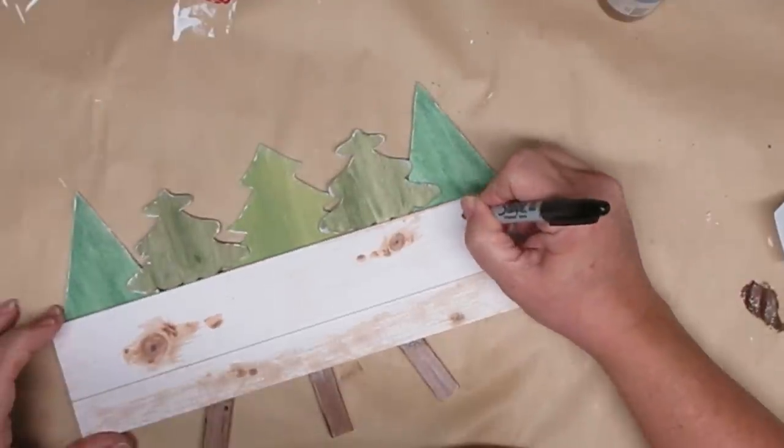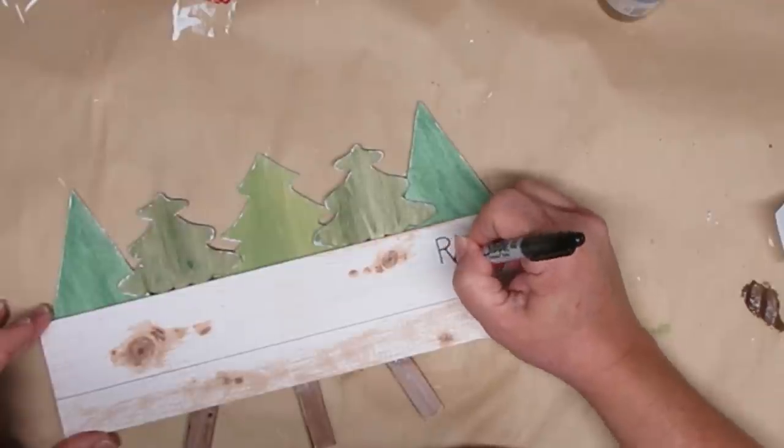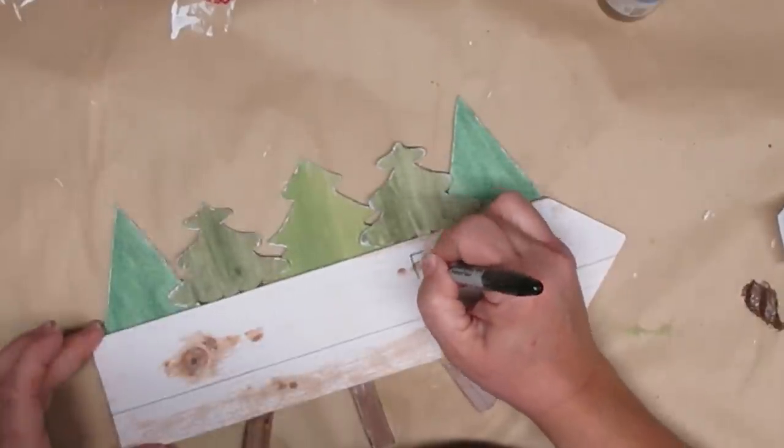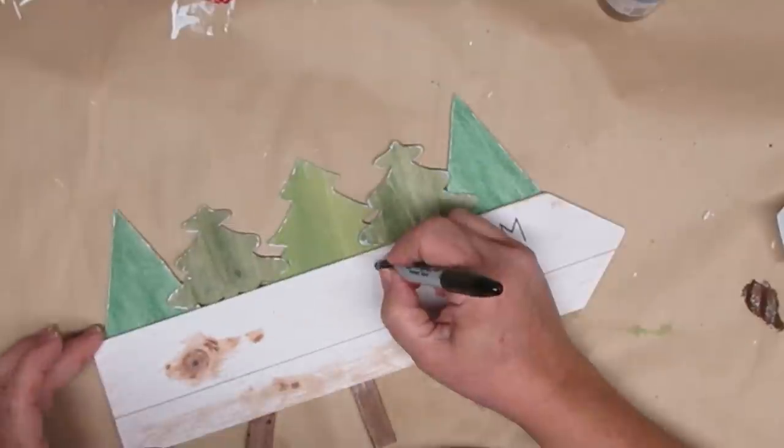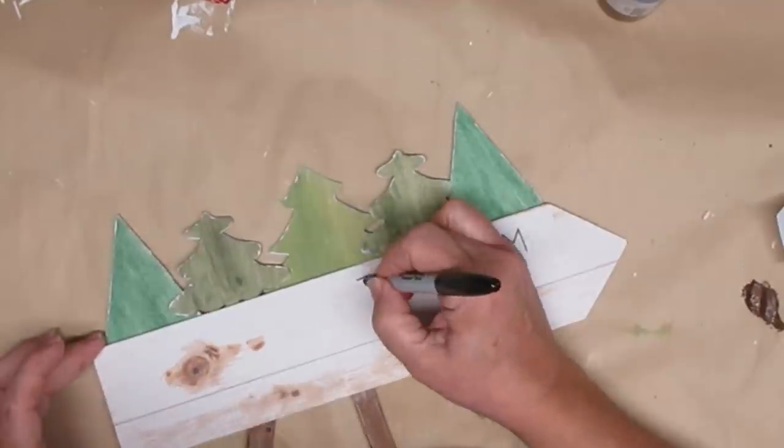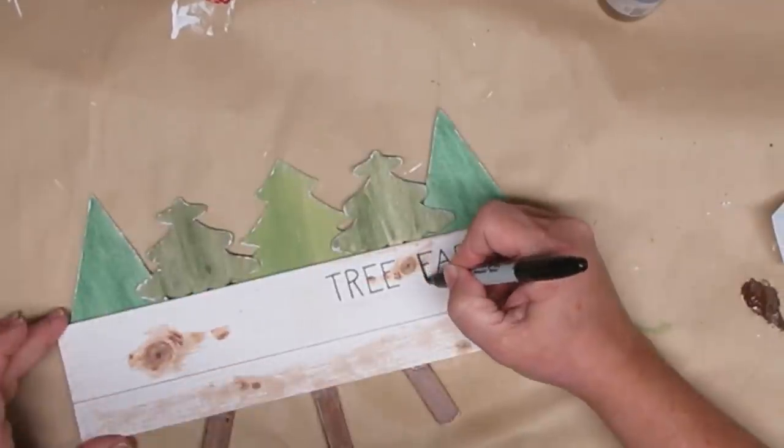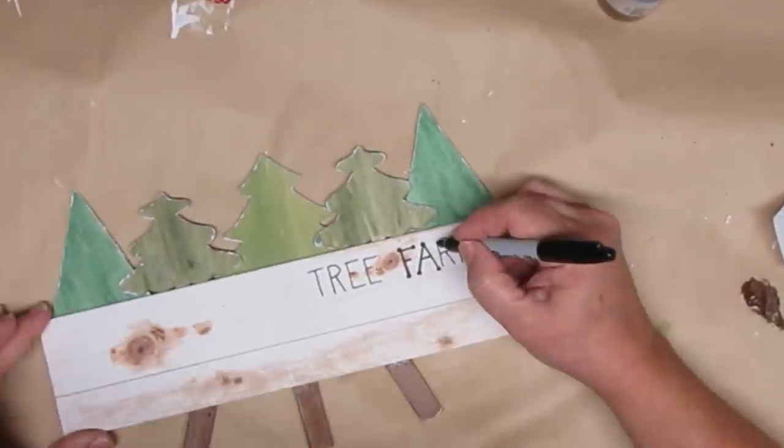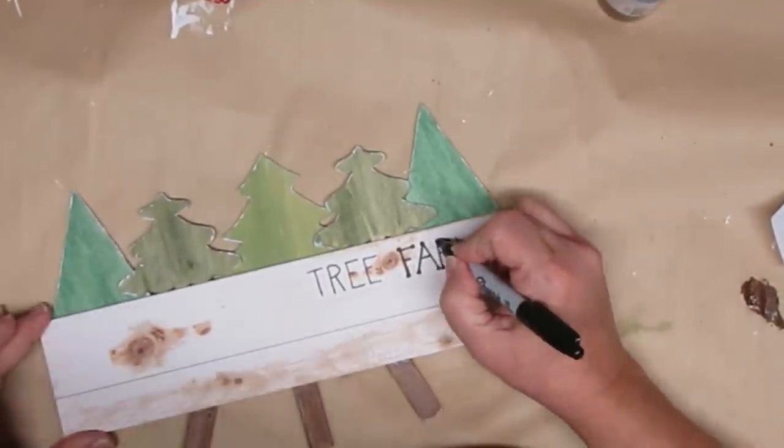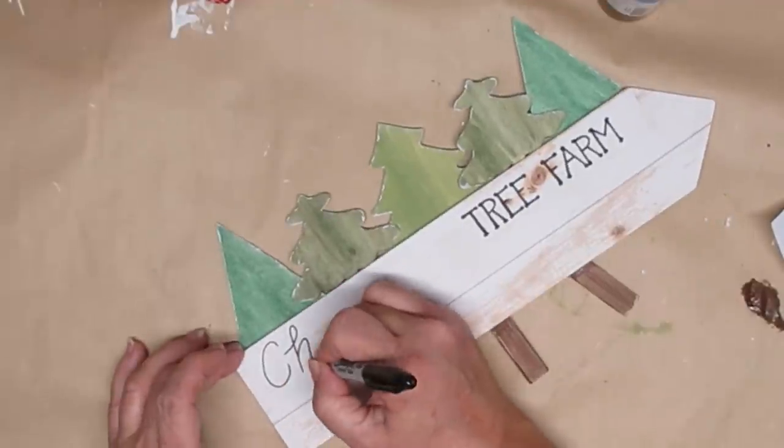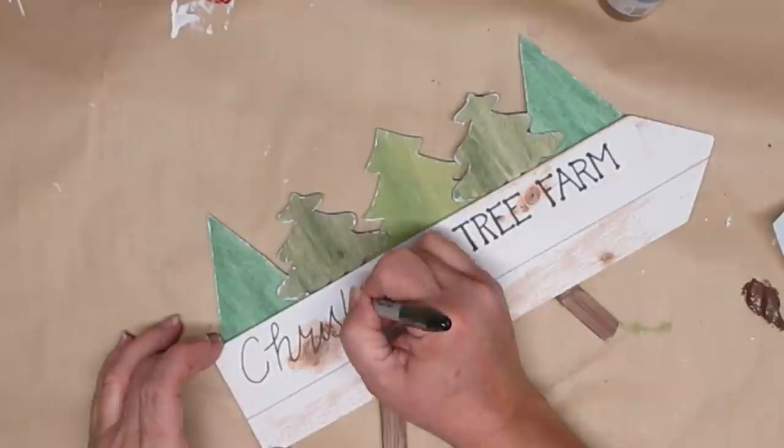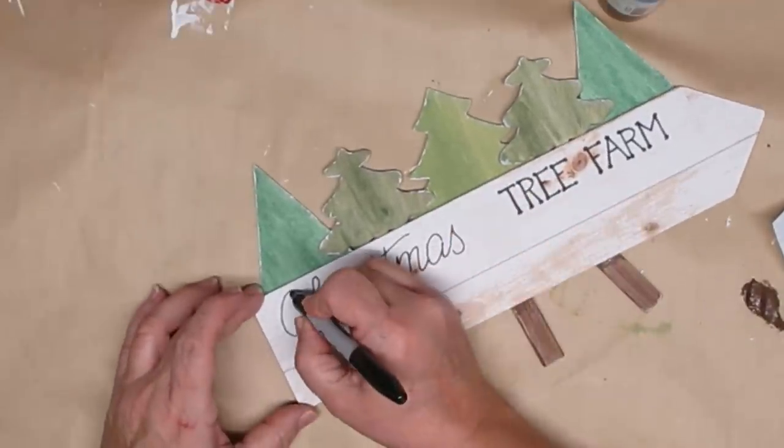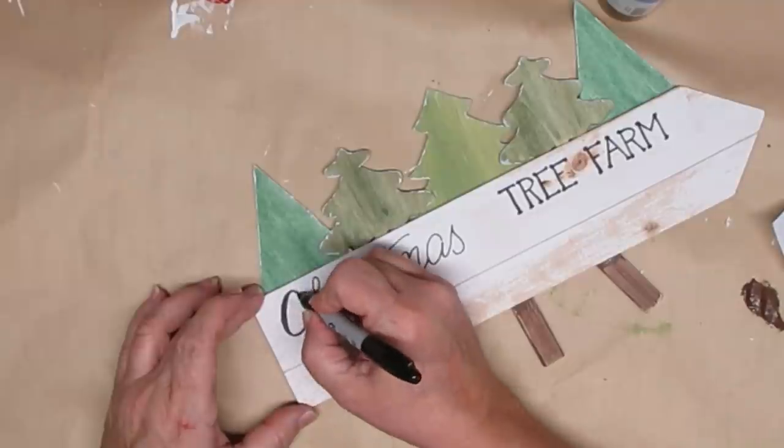The last part of this project is to go ahead and add some words. So I'm going to write the words Christmas Tree Farm. I'm just going to freehand it and give it a little bit of quirky letters. I'm going to do Christmas in more of a cursive font and then I'll add a few other details down at the bottom. You can also see that I painted the brown legs on this. I used burnt umber and I just gave it a little bit of a brush so the little posts that hold the sign up would look like little tree trunks.